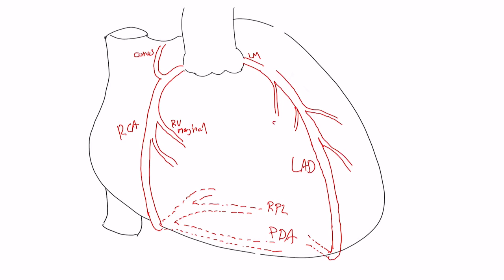These are going to be septal branches, supplying the septum, and these are going to be diagonal branches. These are supplying the anterolateral segments.